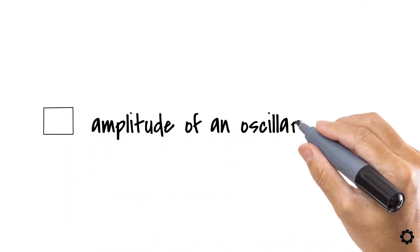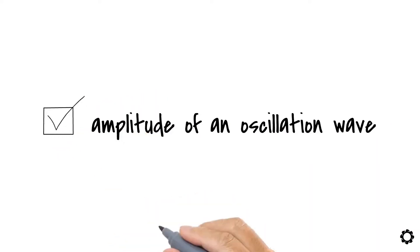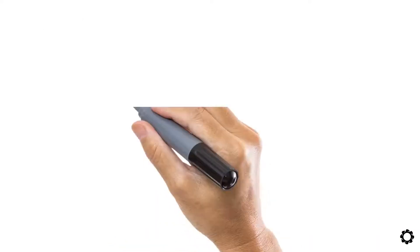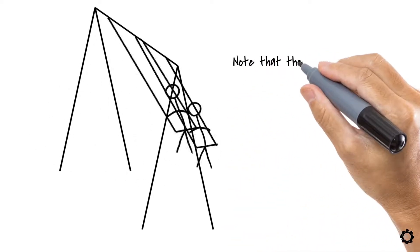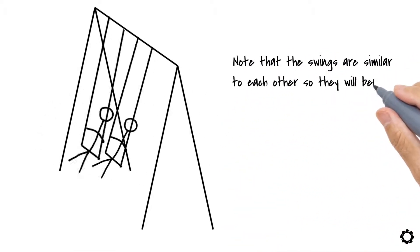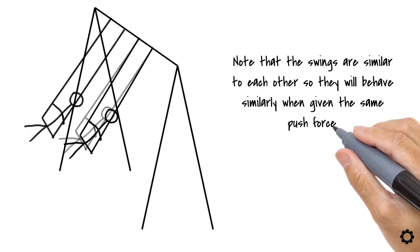Now that we have successfully recalled what is meant by amplitude of an oscillation wave, let's recall what is meant by the wave's phase by using the same swing example as before. But let's introduce one more swing into the mix to understand better what is meant by phase. Note that the swings are similar to each other so they will behave similarly when given the same push force.